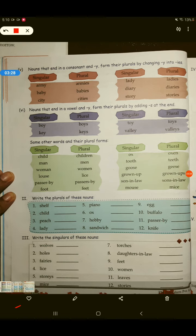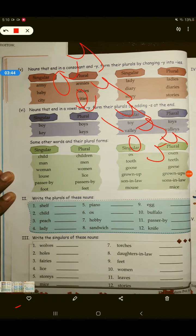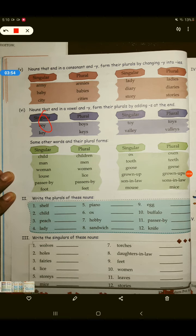Now, the next one. Noun that end in a vowel and Y form their plurals by adding S at the end. जब vowel आएगा, A-E-I-O-U. जब कोई भी word इन सब में end करेगा, तो आप उसके आगे सिर्फ S लगा दोगे. और वो plural बन जाएगा. ठीक है, children? Example, boy, boys. O-Y आया. Key, keys. Toy, toys. Valley, valleys. Simple to understand.